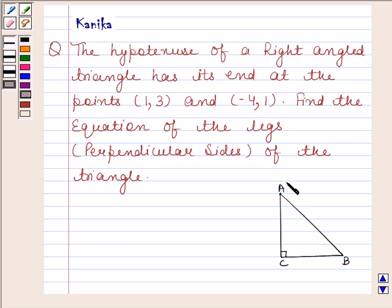This means A has coordinates (1, 3) and B has coordinates (-4, 1). We have to find the equation of legs, that means we have to find the equation of perpendicular sides AC and BC of this triangle.